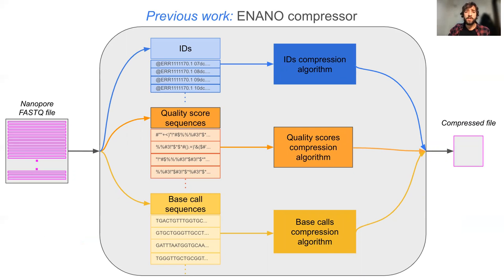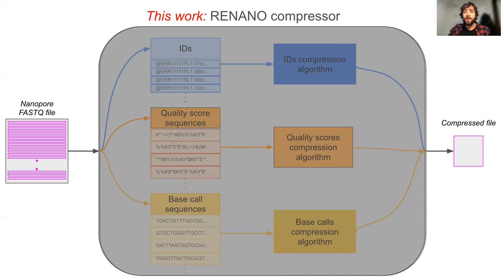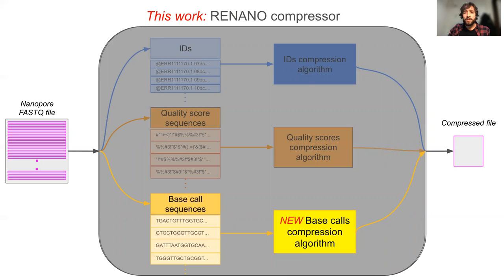A nano achieves state of the art compression by focusing in the compression of quality score sequences. In this work, we introduce ReNano, which is a new Nanopore FASTQ compressor that builds on a nano by replacing the base call sequences compression component while keeping the other components intact.